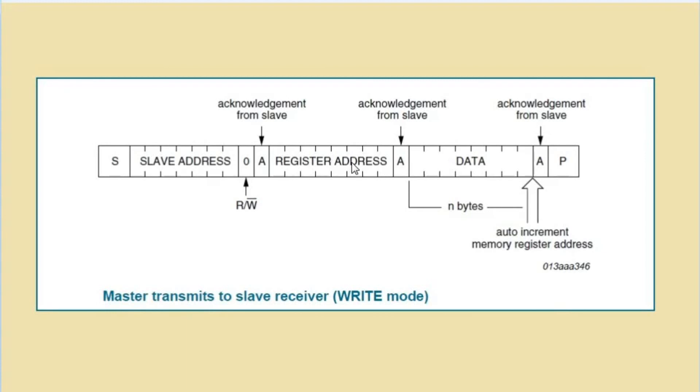On reception of address, slave will acknowledge. Then master will send data and before slave acknowledges to the master, it will auto increment memory register address to accept the new data. And at the end of the transmission, master will send stop condition.